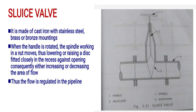Here is the image of a sluice valve. The figure shows the hand, the spindle, and the gate. When the handle is rotated, the spindle works, thus lowering or raising a disc fitted closely in the recess against the opening, consequently either increasing or decreasing the area of flow.